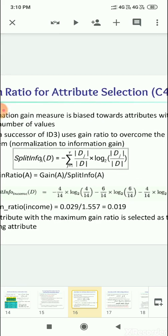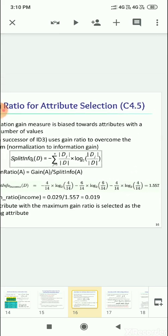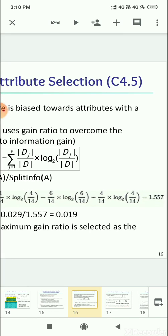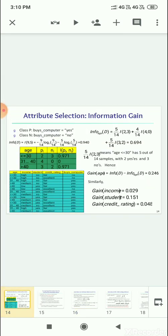That is putting here in the equation: minus 4 by 14 times log 4 by 14 to the base 2, minus 6 by 14 times log 6 by 14 to the base 2, minus 4 by 14 times log 4 by 14. How many high, how many medium, how many low. Then you get the value 1.557. That is the split info.